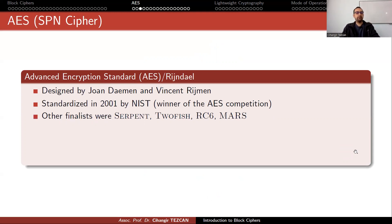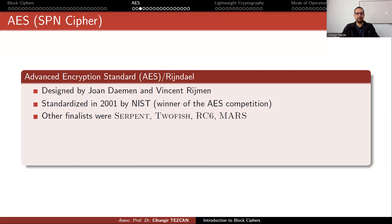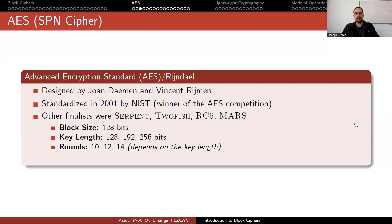There were some famous finalists in the AES competition: Serpent, TwoFish, RC6, and Mars. These algorithms can also come up when you use libraries like OpenSSL. Currently they are all secure, but we prefer to use AES.